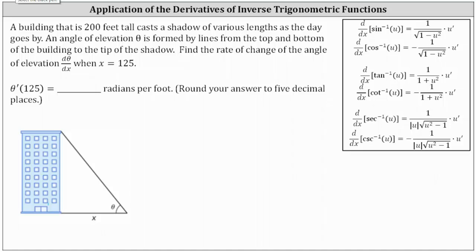A building that is 200 feet tall casts a shadow of various lengths as the day goes by. An angle of elevation theta is formed by the lines from the top and bottom of the building to the tip of the shadow. Find the rate of change of the angle of elevation, which is d theta dx, when x equals 125.